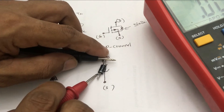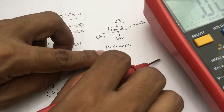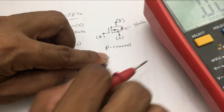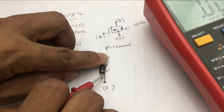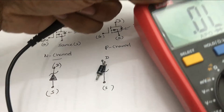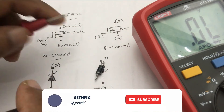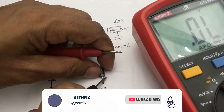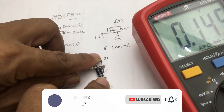If it is a P-channel MOSFET, if you connect the black probe to drain and the red probe to source, a reading should not be given, since the diode is blocking the current flow through the pins. However, when we connect the red probe to the drain pin and the black probe to the source pin, the reading must be shown for good MOSFETs.